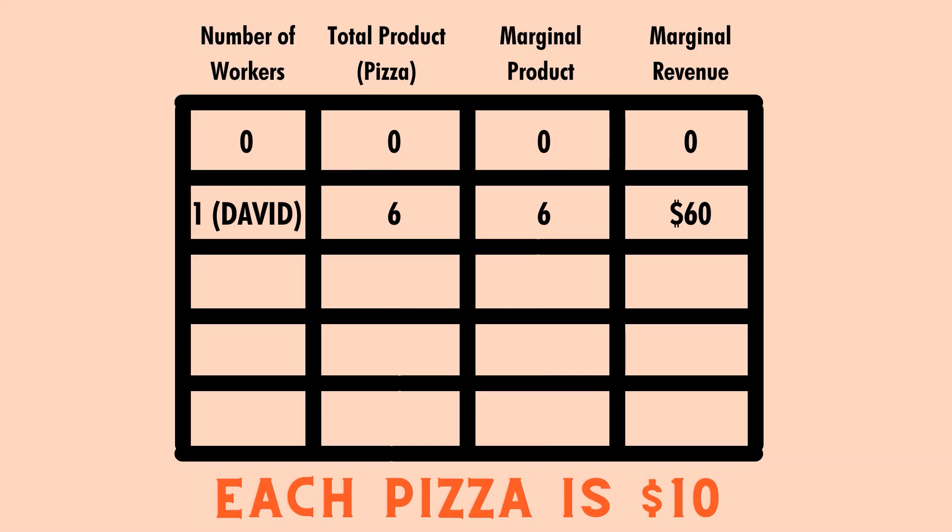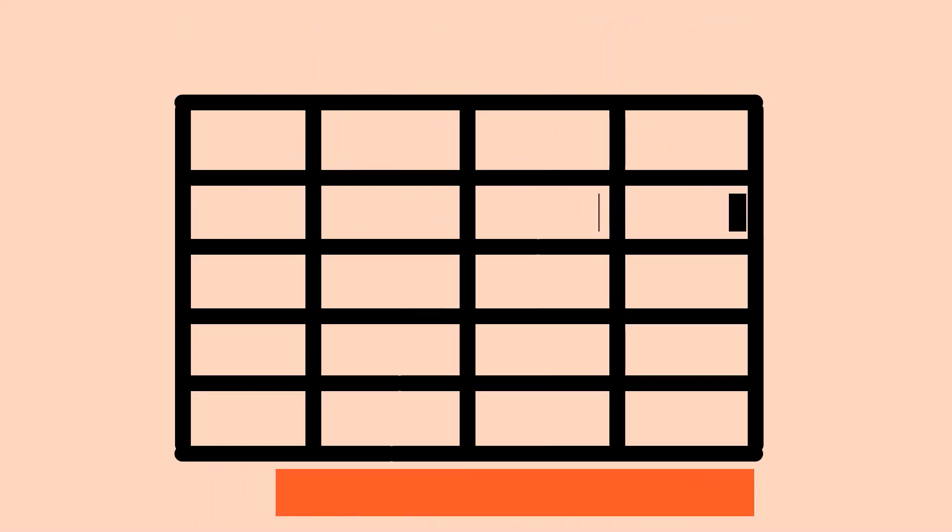When there are zero workers, there are zero pizzas produced, so the entire first row is zero. When David comes in, the total product and marginal product both increase to six, because he's the only worker there — whatever he produces is what the store produces. Six times ten dollars gives us sixty dollars, which is David's marginal revenue.